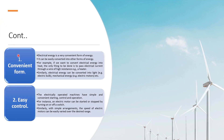First, convenient form. Electrical energy is a very convenient form of energy. It can be easily converted into other forms of energy. For example, if we want to convert electrical energy into heat, the only thing to be done is to pass electrical current through a wire of high resistance — for example, a heater.